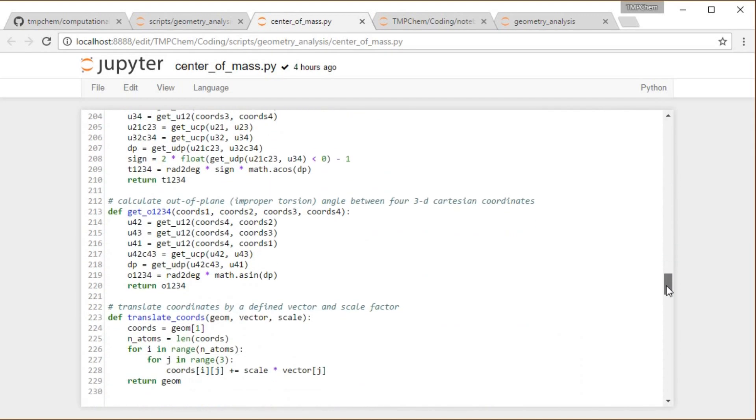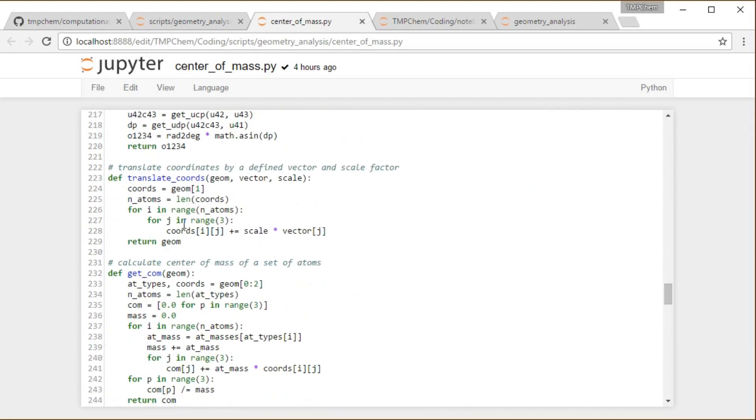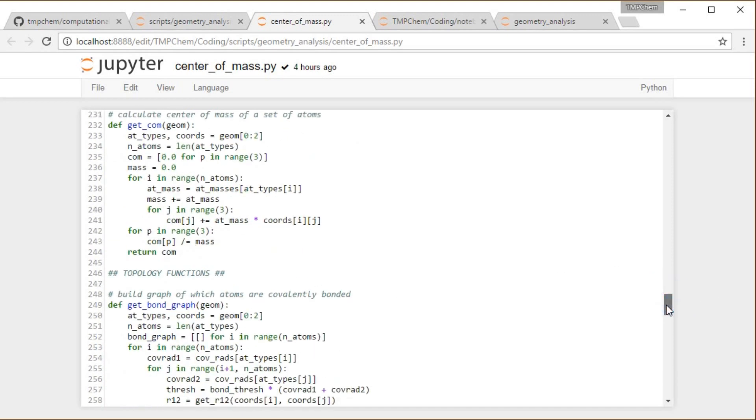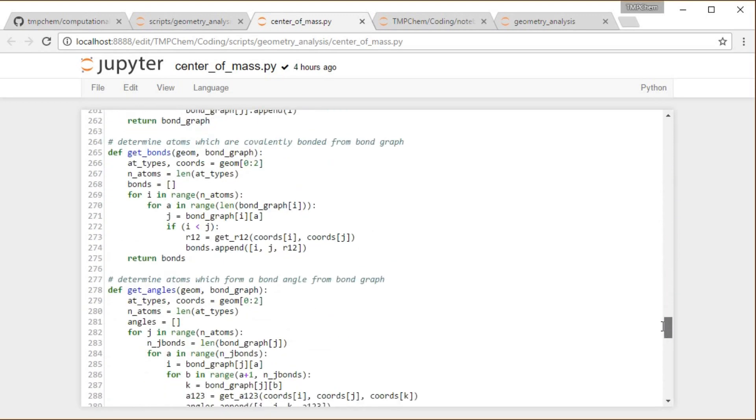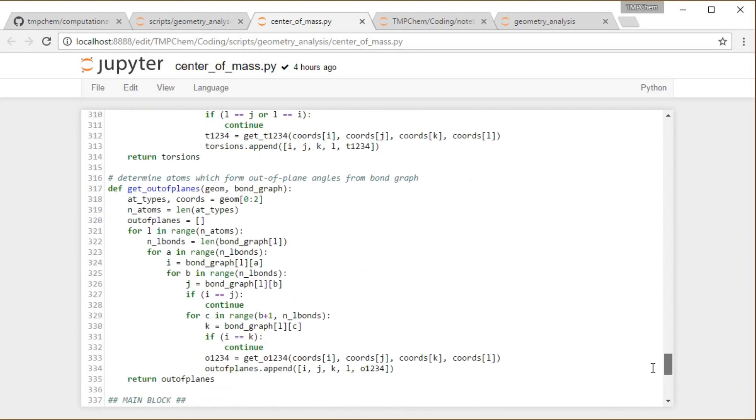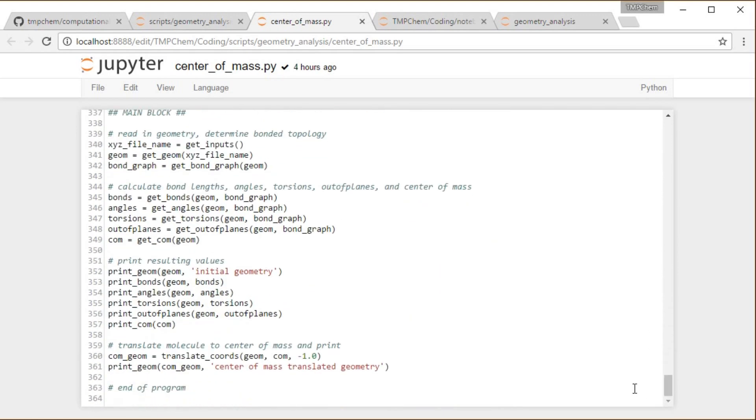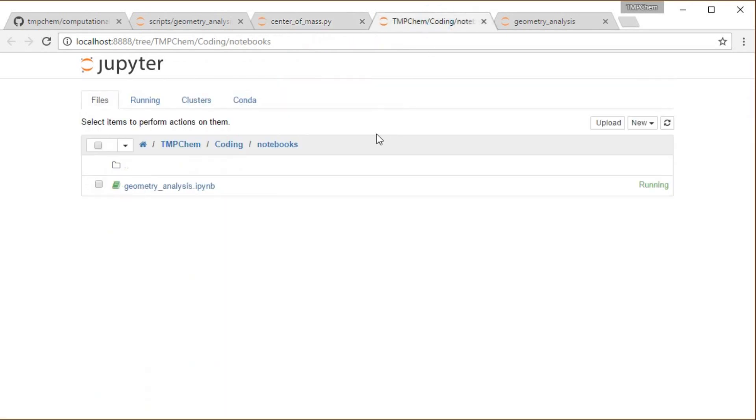Now with some new functions to deal with center of mass. I have print center of mass right there. What else are we going to have here? We have translate coordinates, which I use to translate to the center of mass, get the center of mass, which we use there. And then just some new stuff added to the main block to print some of that stuff.